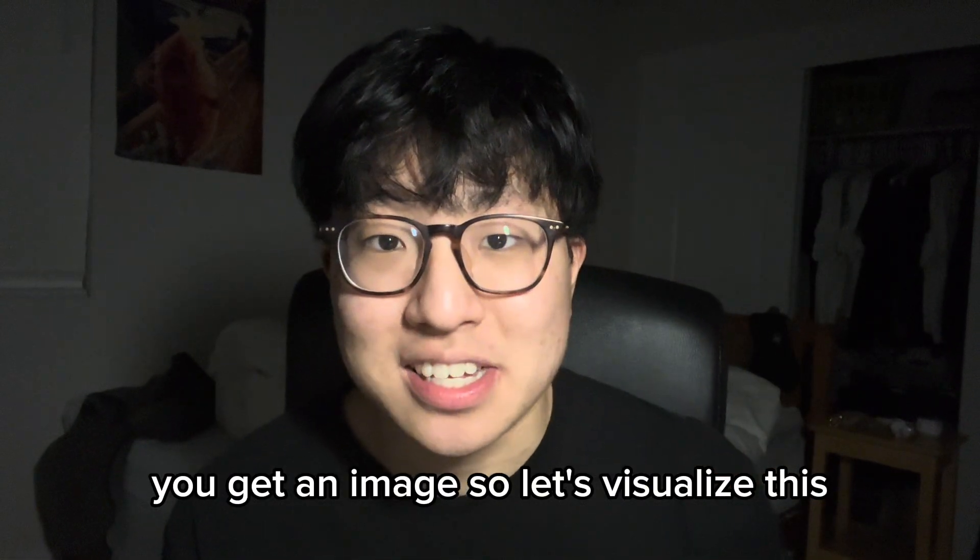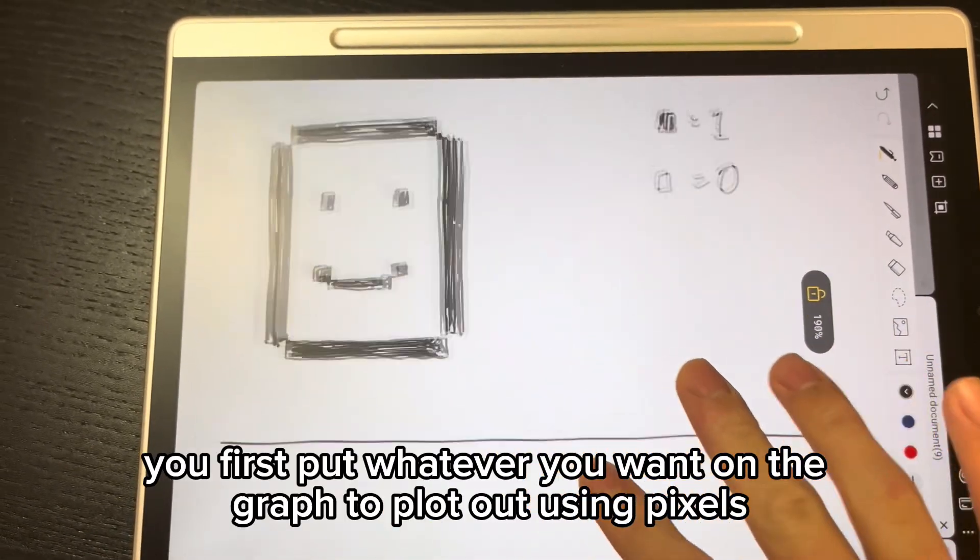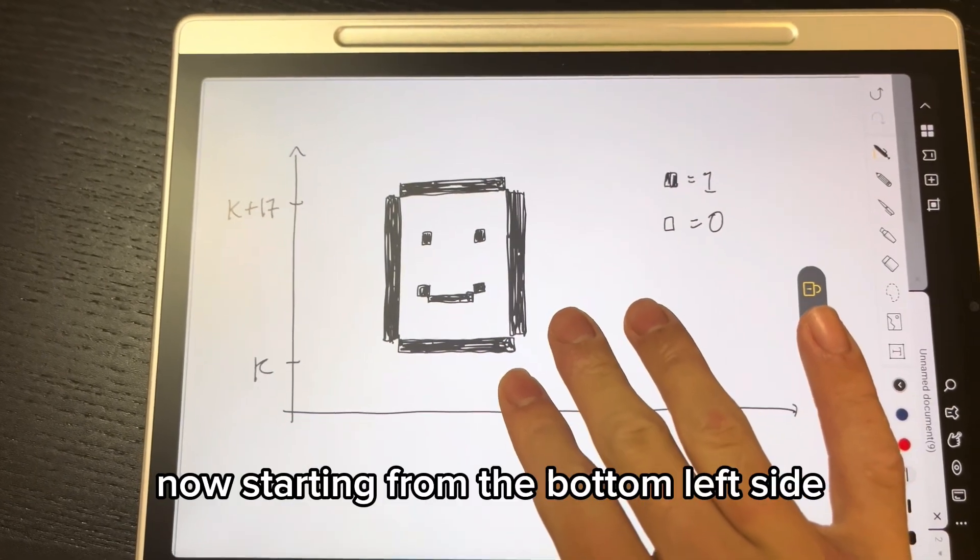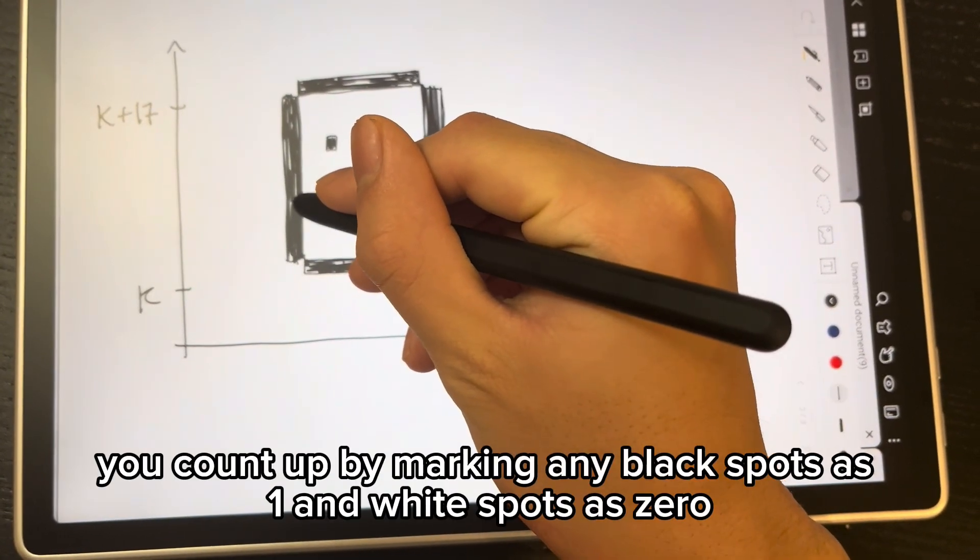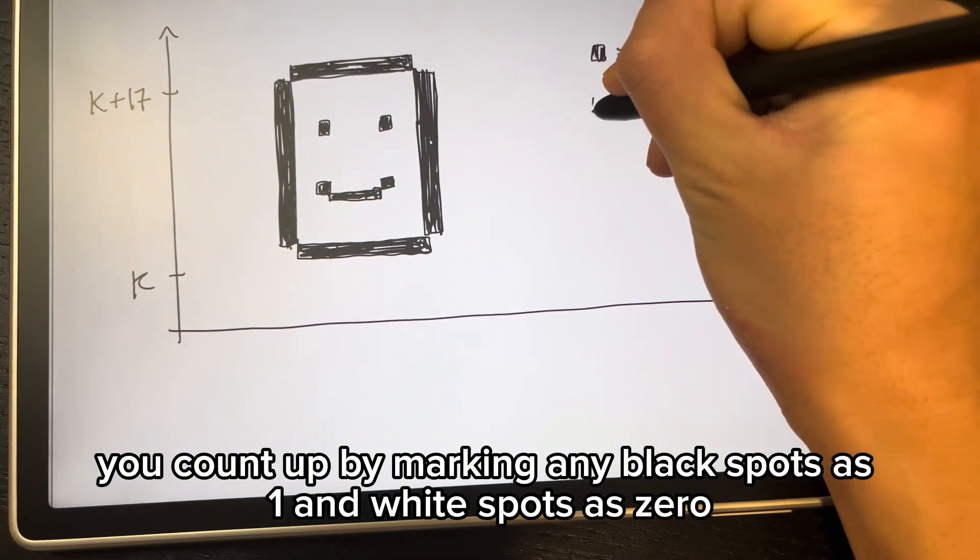So let's visualize this. How it works is you first put whatever you want on the graph to plot out using pixels. Now, starting from the bottom left side, you count up by marking any black spots as 1 and white spots as 0.